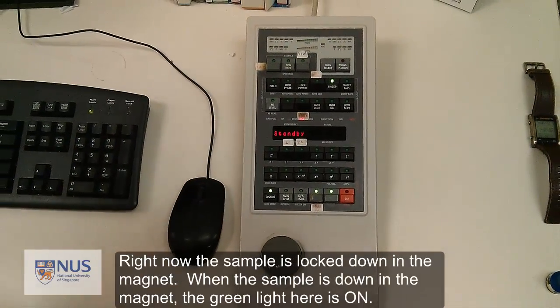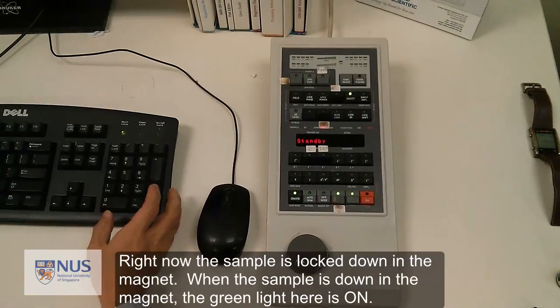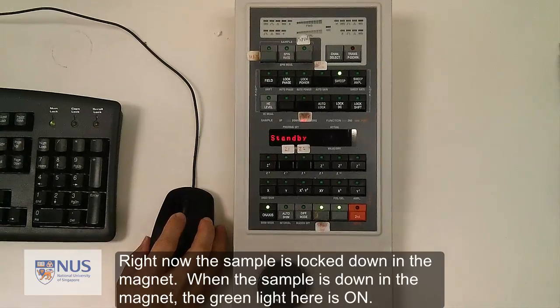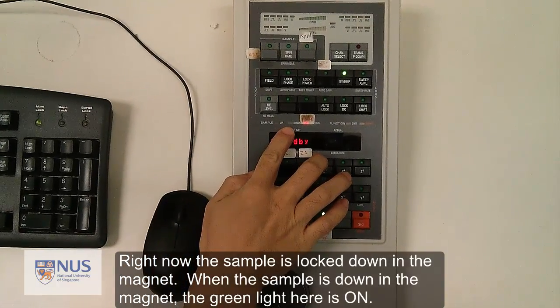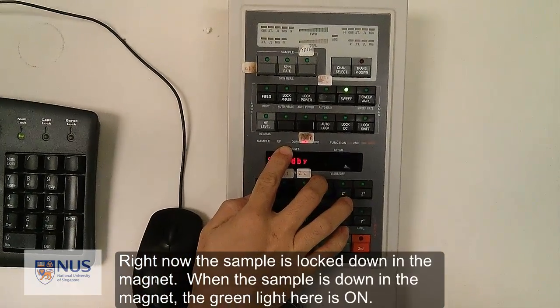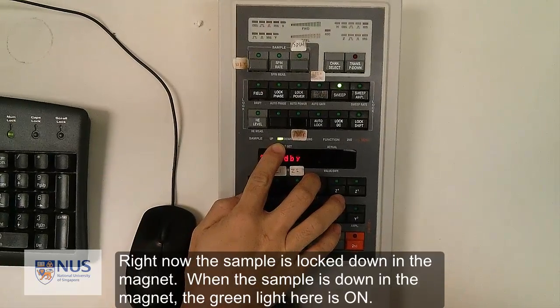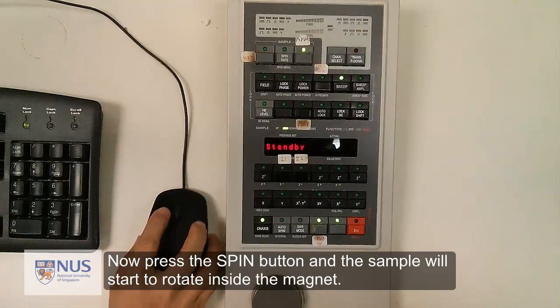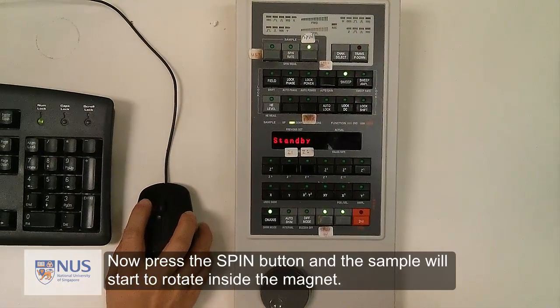Right now the sample is locked down in the magnet. When the sample is down in the magnet, the green light is on. Now press the spin button and the sample will start to rotate inside the magnet.